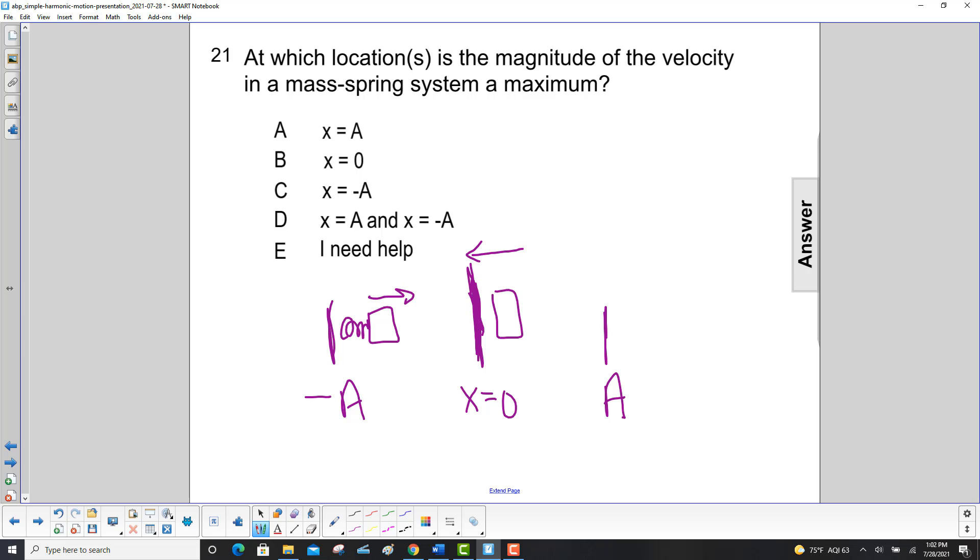So the acceleration is in that direction, so it starts slowing it down. So it reaches its maximum speed right here at x is equal to zero.